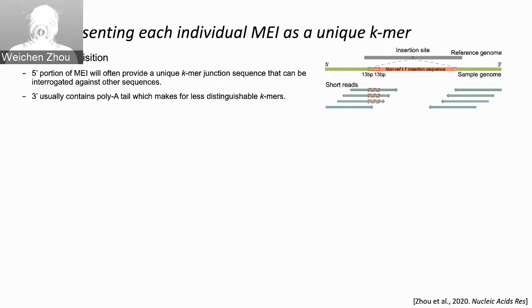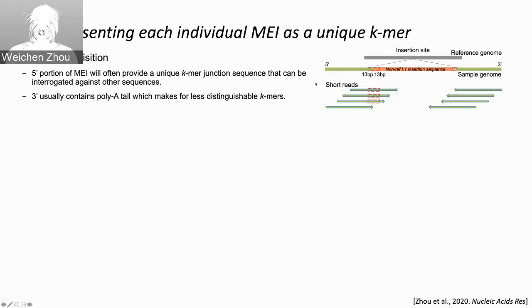We developed a unique K-mer method to represent each individual insertion. The idea is that the 3'-end portion of a mobile element insertion provides a unique junction if we extract sequence from both the mobile element insertion and the reference sequence. We then construct it as a K-mer so we can use this K-mer to represent each mobile element insertion and interrogate against other sequences.